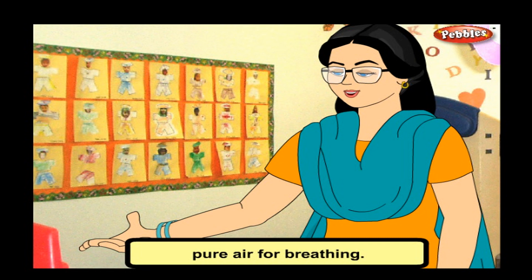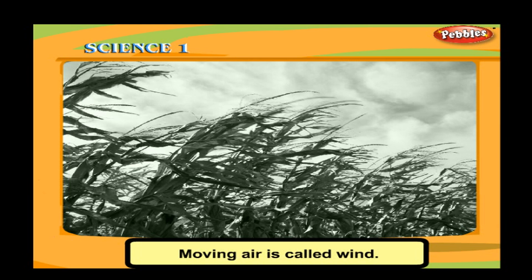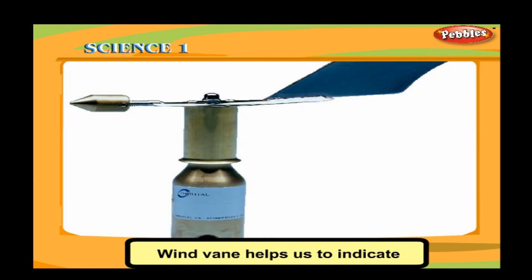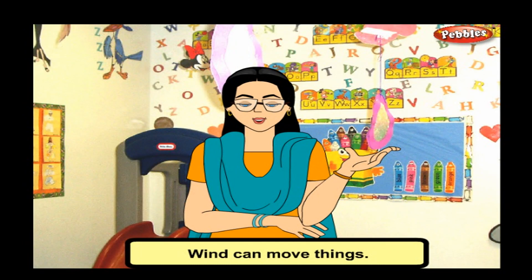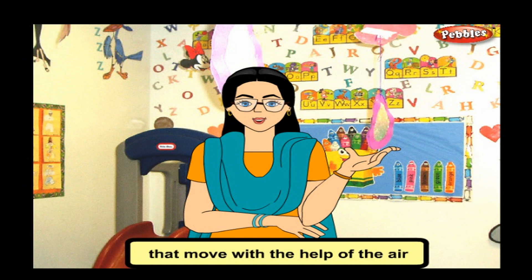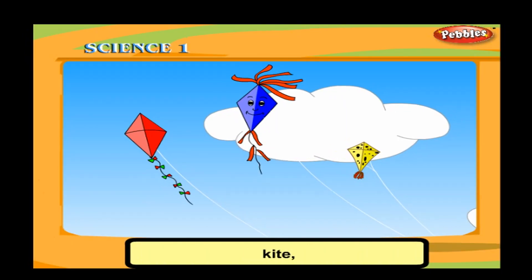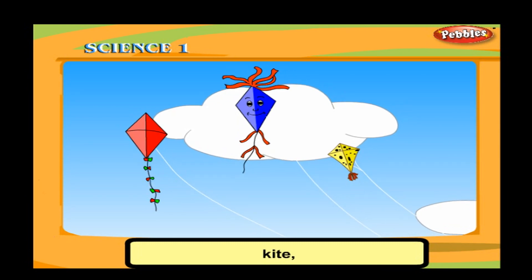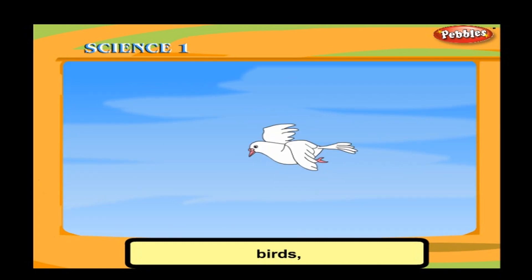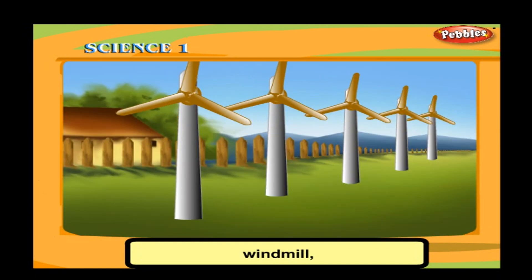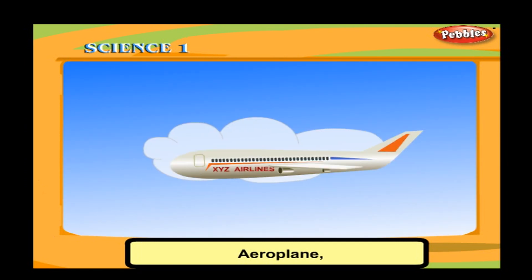Moving air is called wind. A wind vane helps us to indicate the direction of the wind. Wind can move things. Some things that move with the help of air include balloons, kites, birds, windmills, and aeroplanes.